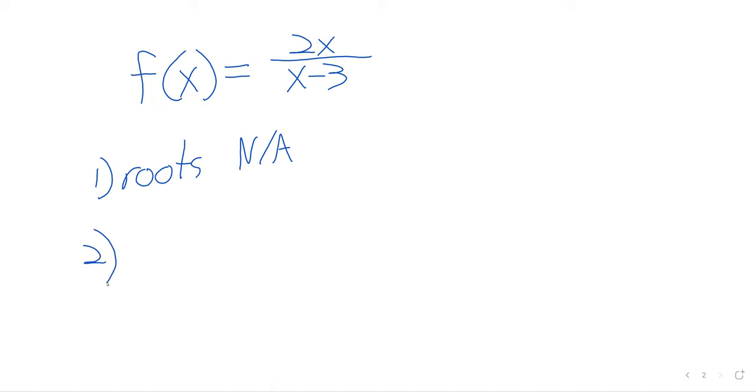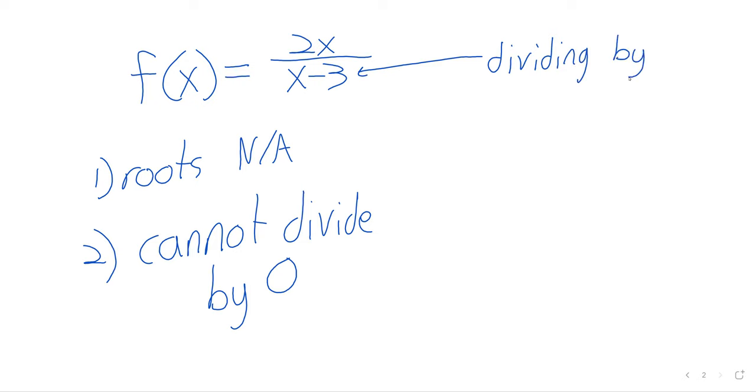The second statement is that we cannot divide by zero. And we cannot divide by zero. So we need x minus 3 not to be zero.